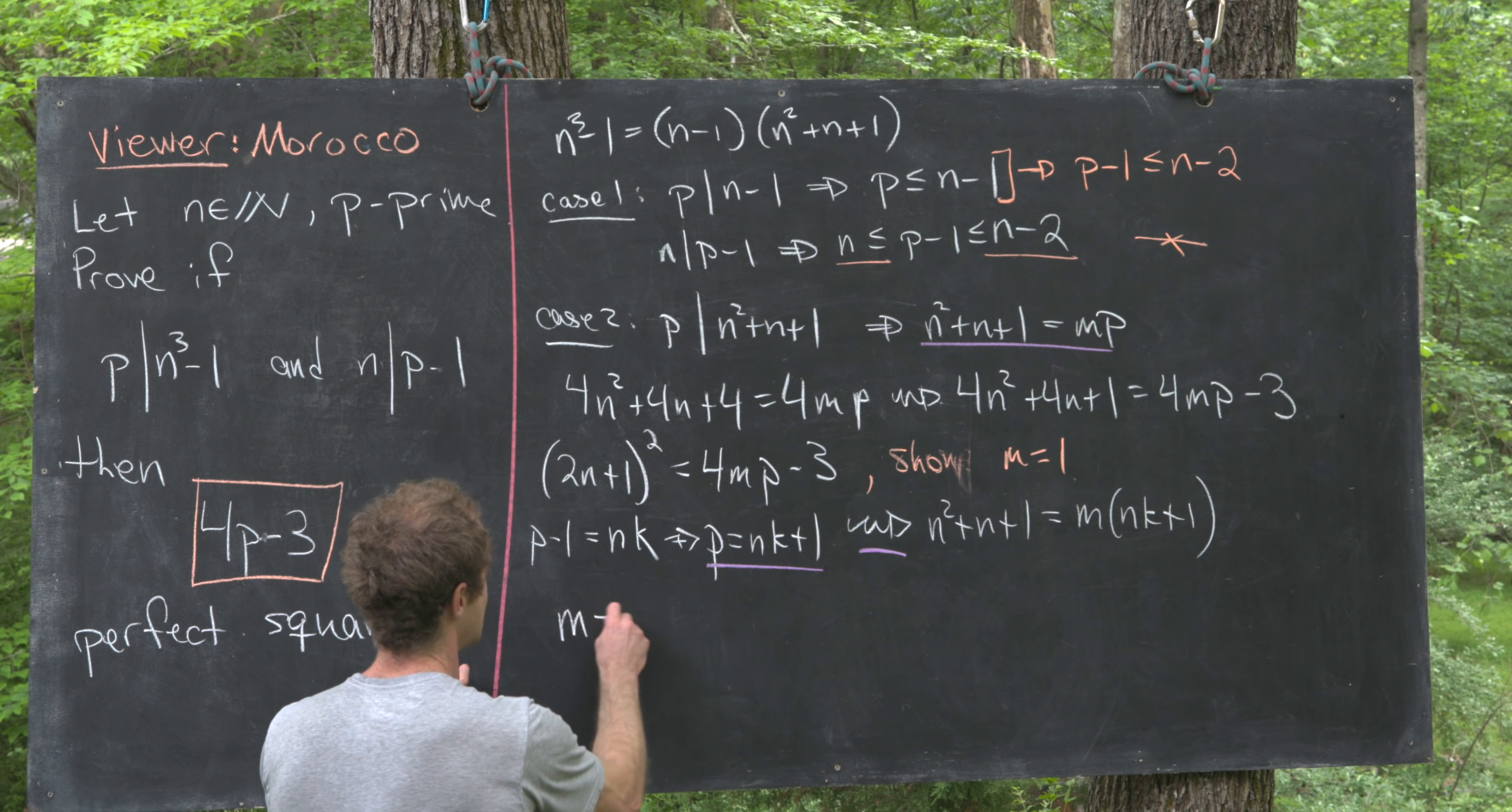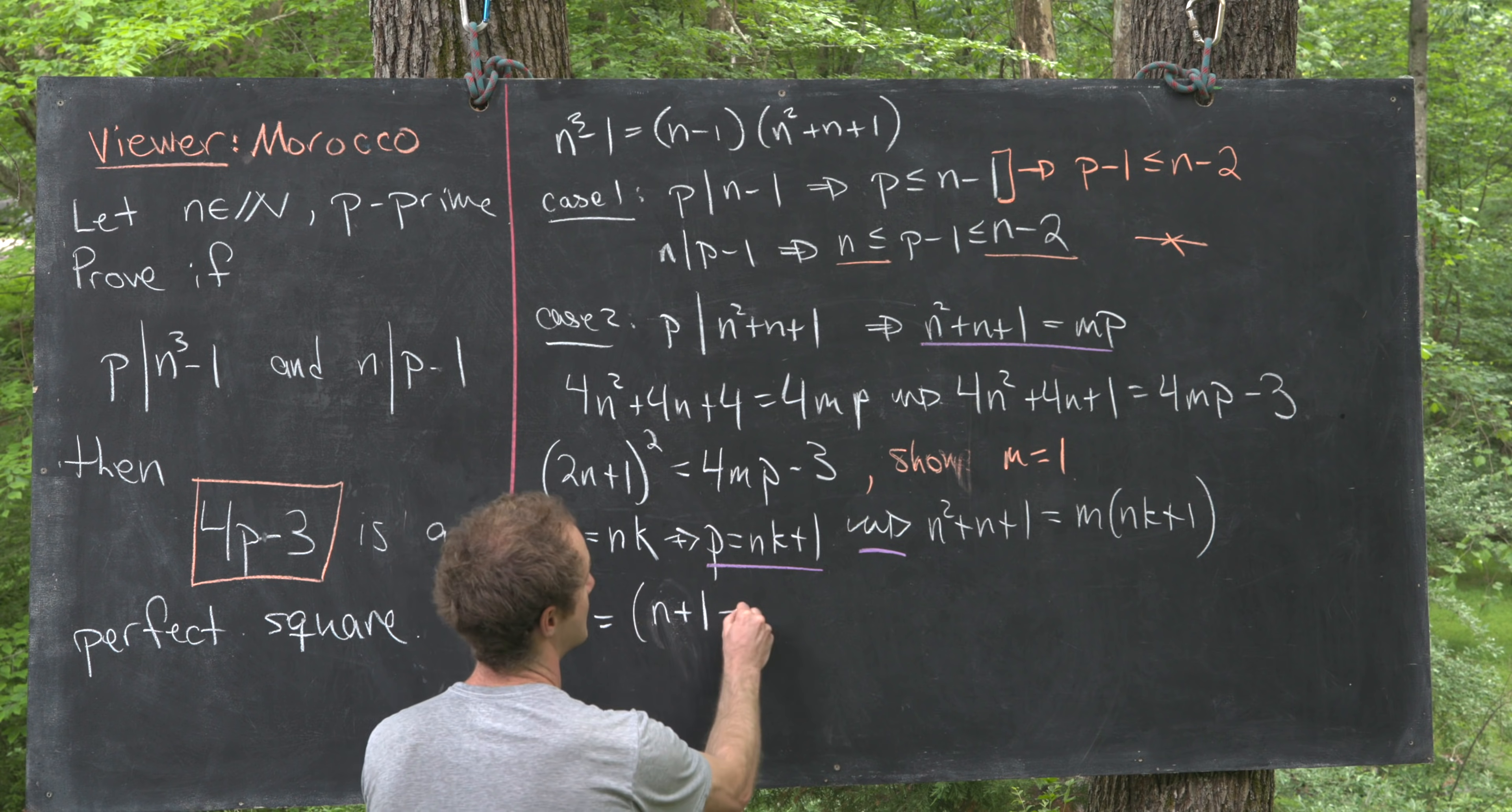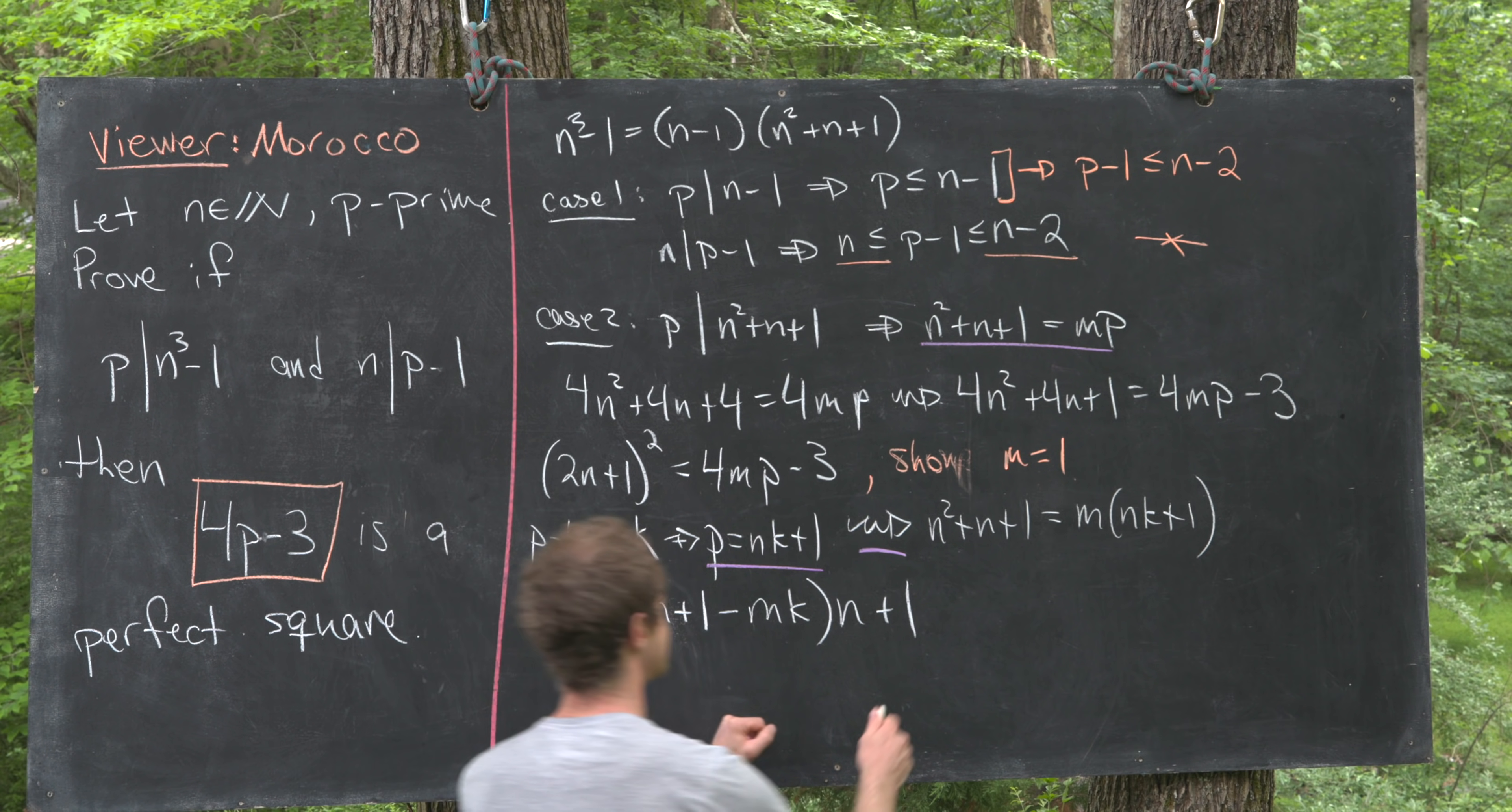So that's going to give us m equals, and I'm going to write this in a tricky way, this is going to be (n+1-mk) times (n+1).